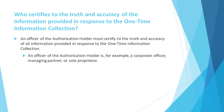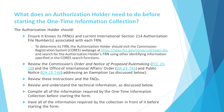Who certifies to the truth and accuracy of the information provided in response to the one-time information collection? An officer of the authorization holder must certify to the truth and accuracy of all information provided. An officer of the authorization holder is, for example, a corporate officer, managing partner, or sole proprietor.